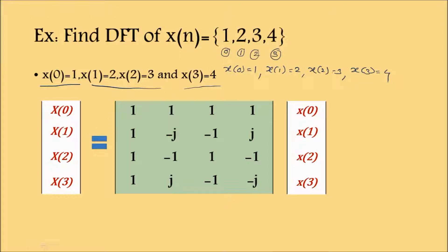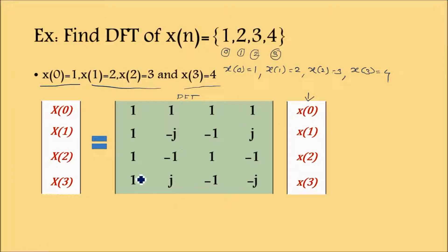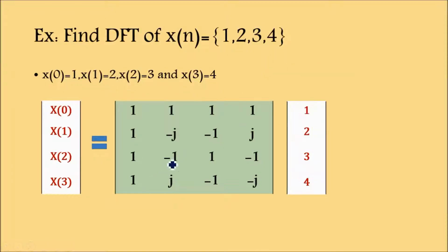Now write down the DFT matrix. X[0], X[1], X[2], X[3] equals the DFT matrix multiplied by the input. The DFT matrix is: [1, 1, 1, 1; 1, -j, -1, j; 1, -1, 1, -1; 1, j, -1, -j]. We then put in the values x[0], x[1], x[2], x[3].